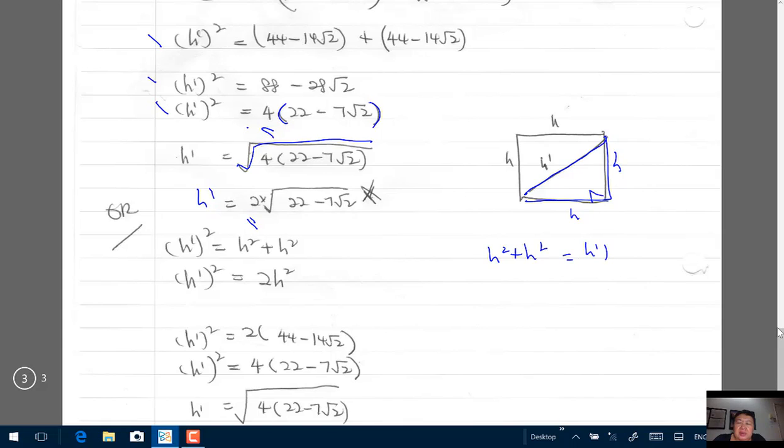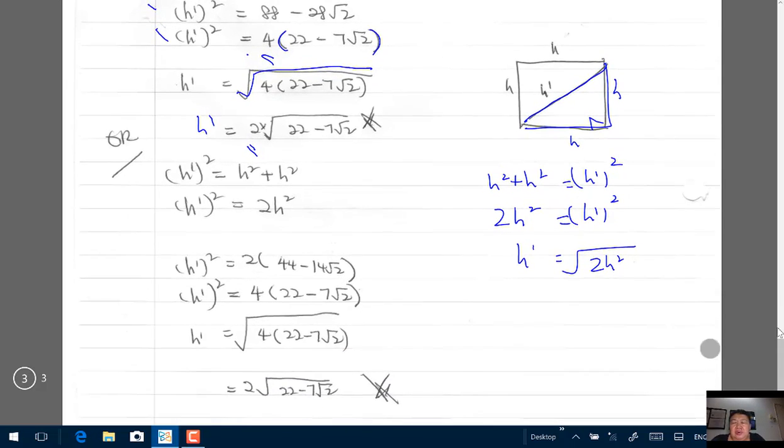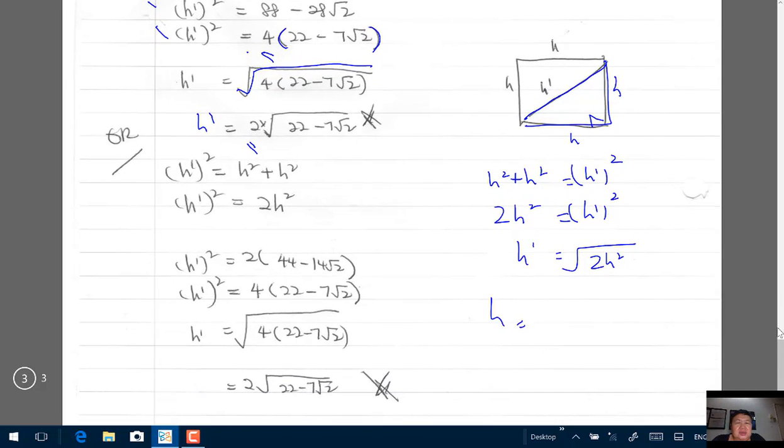h squared plus h squared is 2h squared equals h1 squared. So to find h1, h1 will be square root of 2h squared. Now the h represents the side, which is 44 minus 14 root 2.